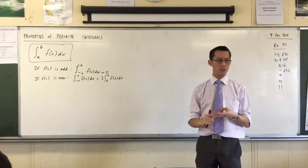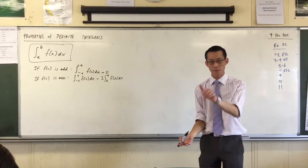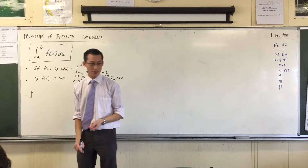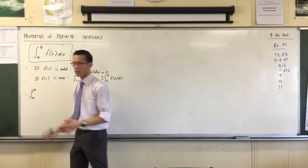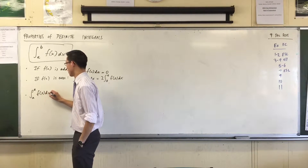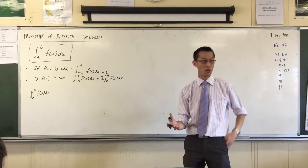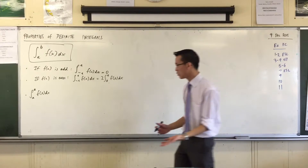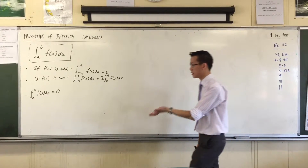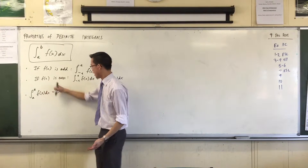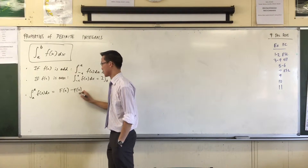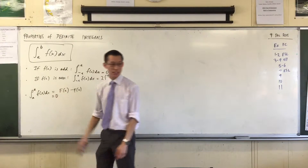There are other properties that come out of the definition of definite integrals. Property three: suppose the upper and lower bounds are the same number — integrating from a to a over an interval with no width. The area has to be zero because you're not actually going anywhere. This is easy to see from the primitive: you get F(a) minus F(a), which gives zero.